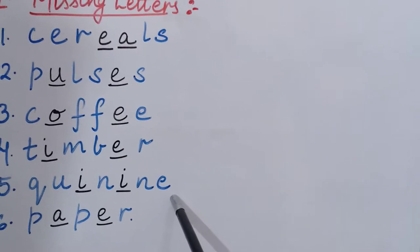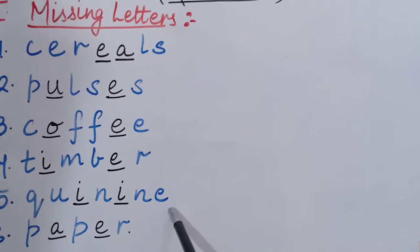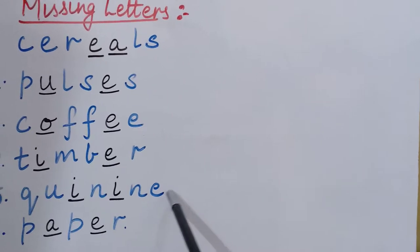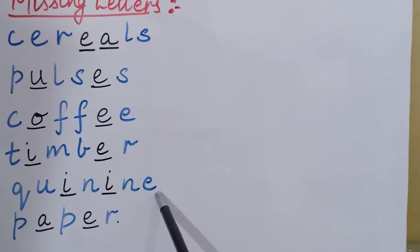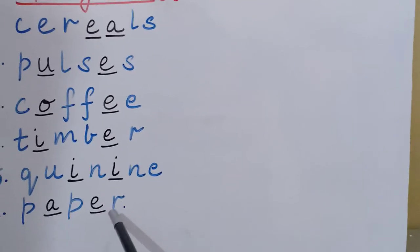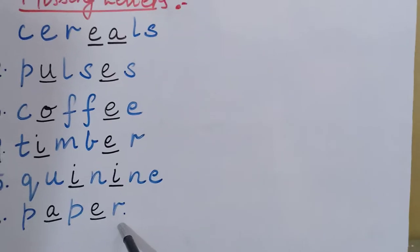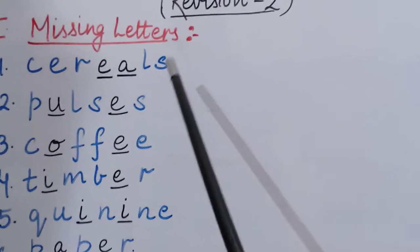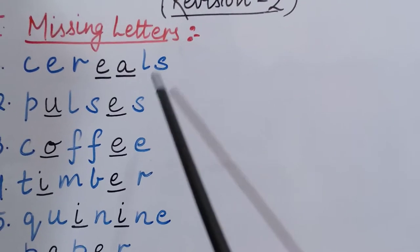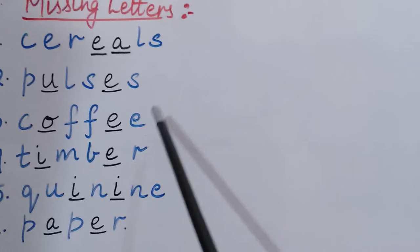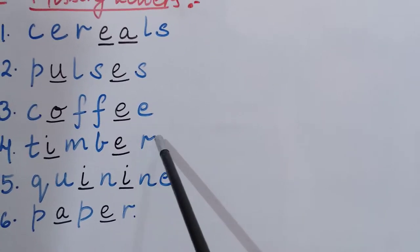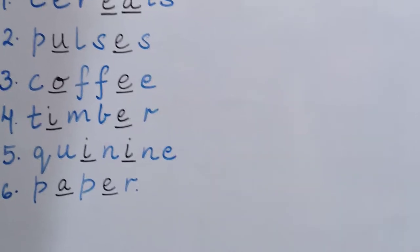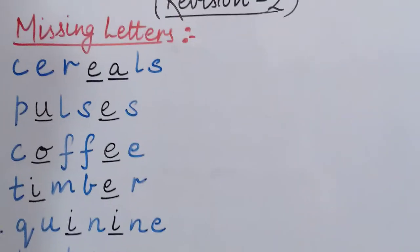Quinine plant is very useful to cure malaria disease. Whenever the patient is suffering from malaria, you can give leaves of quinine or you can make medicine from the quinine plant. The sixth and last word is paper — P-A-P-E-R, paper. Again repeating all the missing letters: C-E-R-E-A-L-S cereals, P-U-L-S-E-S pulses, C-O-F-F-E-E coffee, T-I-M-B-E-R timber, Q-U-I-N-I-N-E quinine, and P-A-P-E-R paper. I hope you all have understood the first part — missing letters.